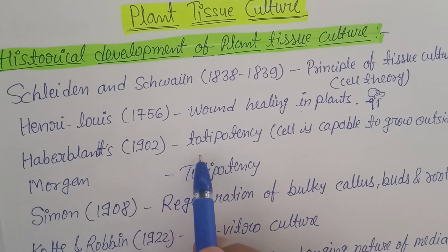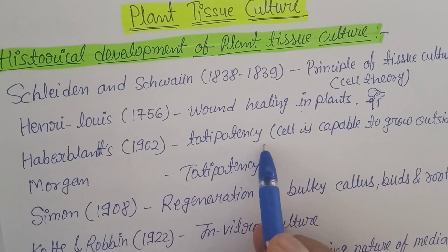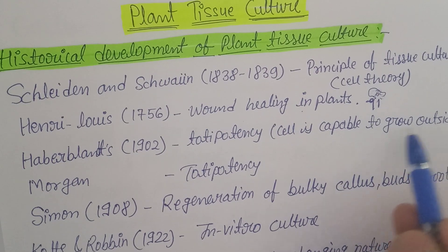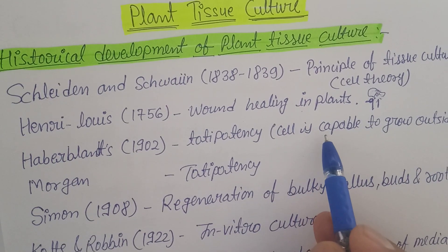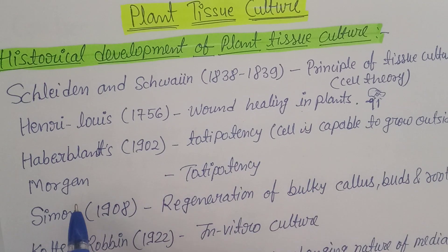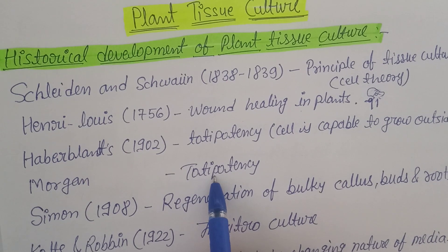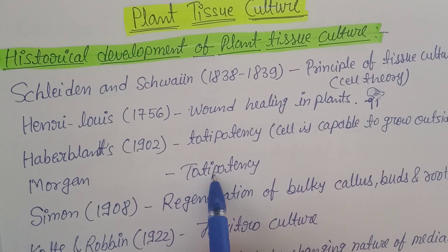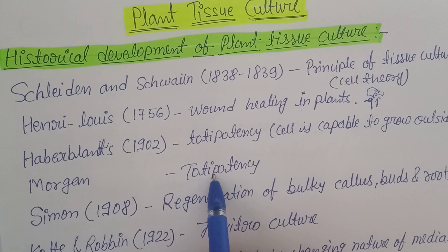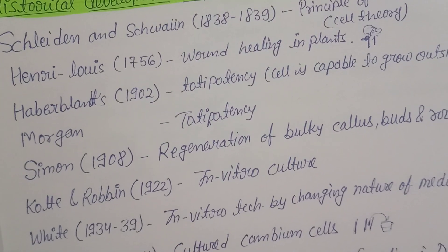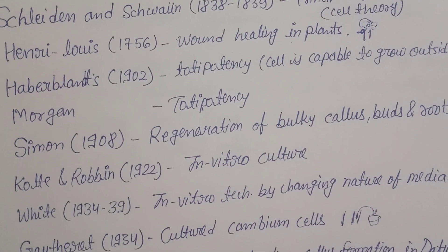Totipotency means a cell is capable of growing outside of the plant body — any particular part, whether root, stem, fruit, flower, or bark. Later, Morgan proved that totipotency is the capability of any part of the plant — stem, root, or leaf — which can grow if it is broken from the plant and cultivated in another soil, generating a new plant. That concept was approved by Morgan.